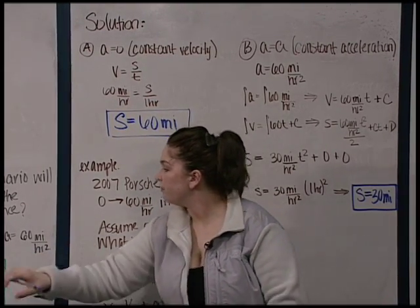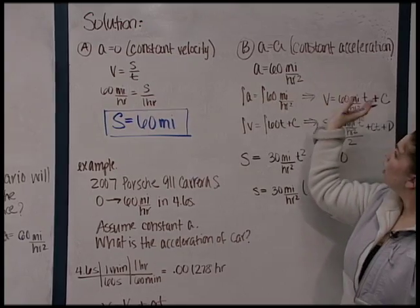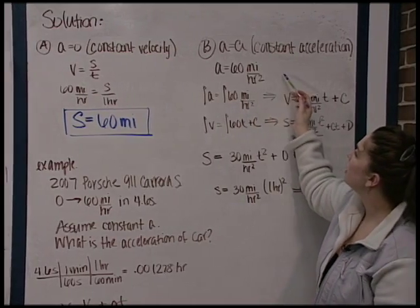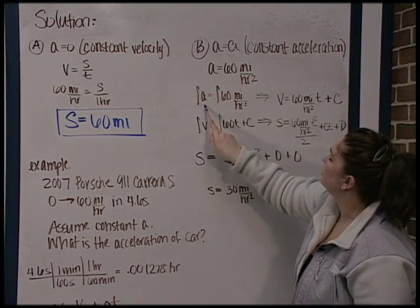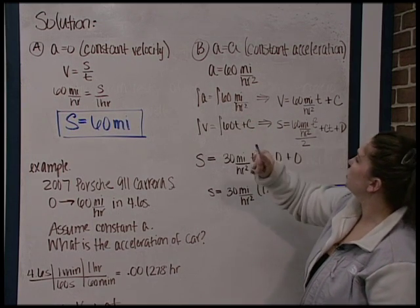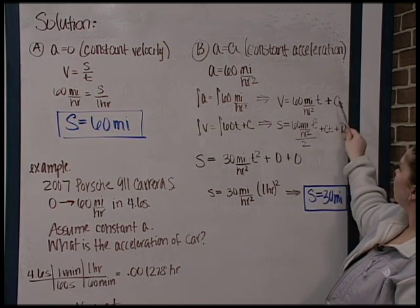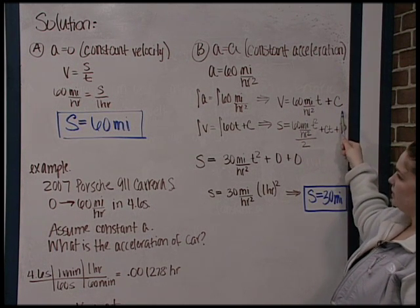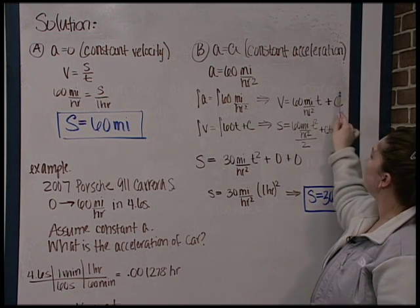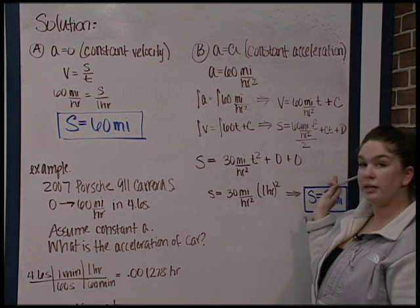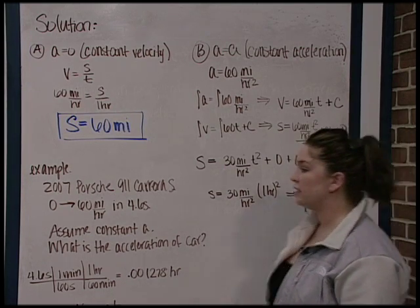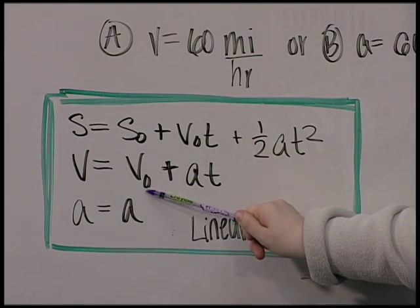The next case is a little bit more complicated. Here, we have constant acceleration. Acceleration equals itself, it's 60. If you take the integral of acceleration, you get velocity. So let's get velocity. We take the integral of 60, and we end up with velocity equals 60 miles per hour squared times time plus a constant c. Now notice that this equation looks strikingly familiar to this equation, the linear acceleration equation for velocity. That's because c, in this case, is v naught, the initial velocity.